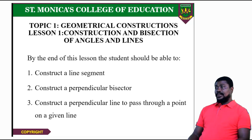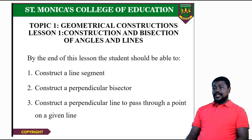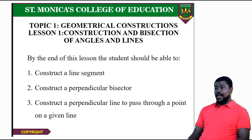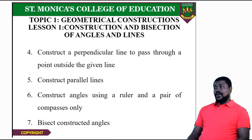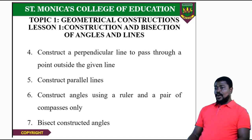At the end of this lesson, you should be able to construct a line segment, construct a perpendicular bisector, construct a perpendicular line to pass through a point on a given line, construct parallel lines, construct angles using a ruler and a pair of compasses only, and bisect constructed angles.